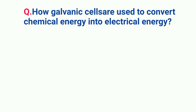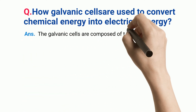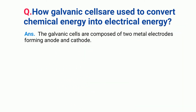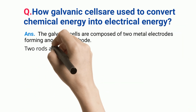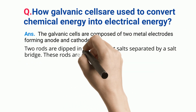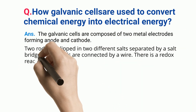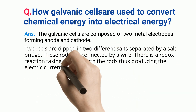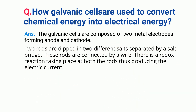How are galvanic cells used to convert chemical energy into electrical energy? The galvanic cells are composed of two metal electrodes forming anode and cathode. Two rods are dipped in two different salts separated by a salt bridge, and these rods are connected by a wire. There is a redox reaction taking place at both the rods, thus producing the electric current.